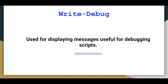For Write-Debug to be activated, you have to enable the debug preferences first, before you run your script. You can set it to 'Inquire', which means it waits for you to give permission to move on and doesn't continue automatically, or you can set it to 'Continue', which means it will display the value but will continue executing.